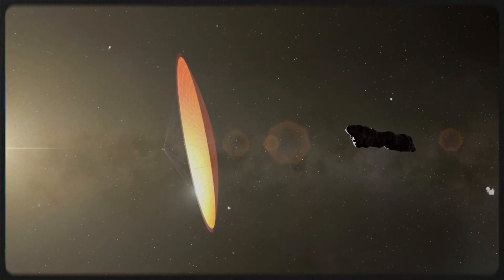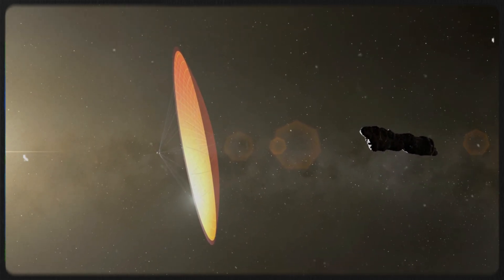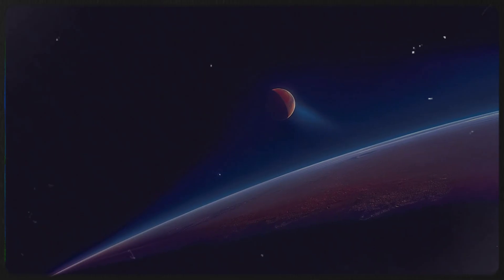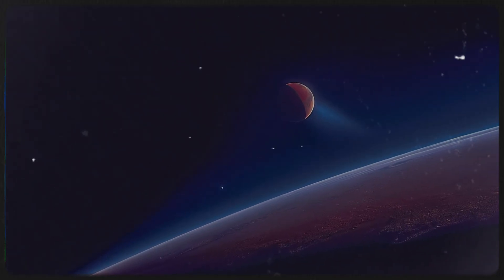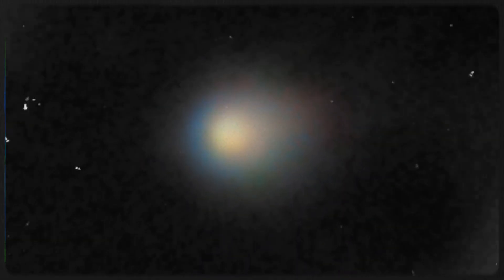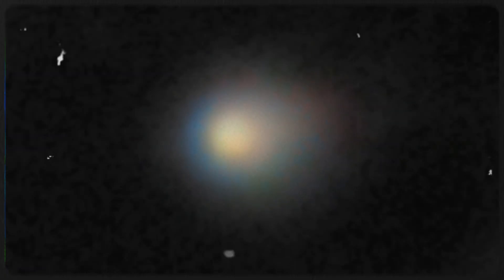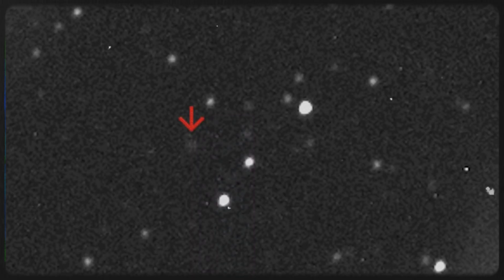High in the cold, silent reaches beyond our solar system, something massive is on the move. Its name is 3i/Atlas, a visitor from the unknown tracing a path through our celestial neighborhood that astonishes and perplexes astronomers across the world.